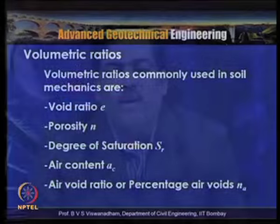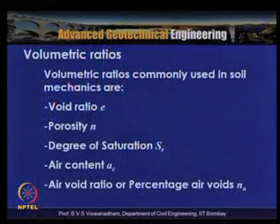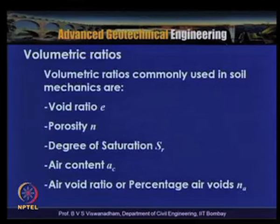Based on the phase diagram, we can deduce a number of volumetric ratios used in soil mechanics and geotechnical engineering. These are: void ratio E, porosity N, degree of saturation SR, air content AC, air void ratio, and percentage air voids NA. From the subsequent slides we will understand the definitions of these and the interrelations among these properties.